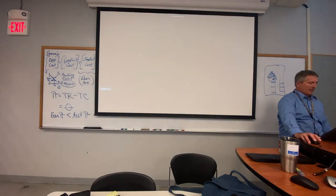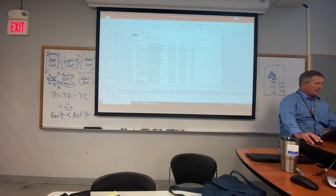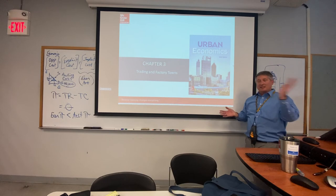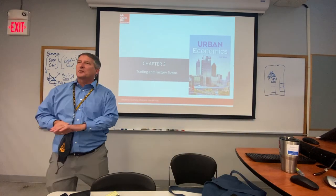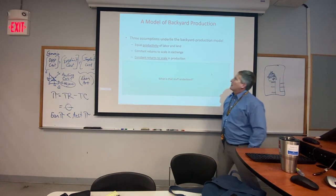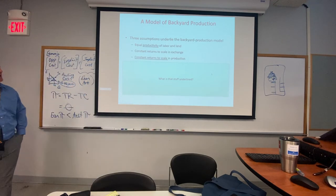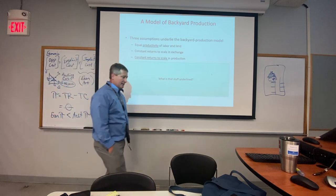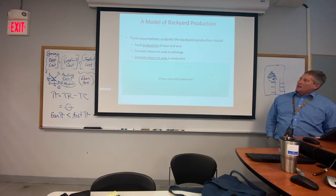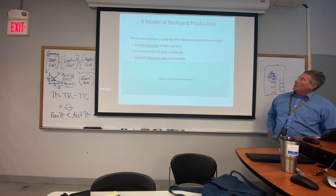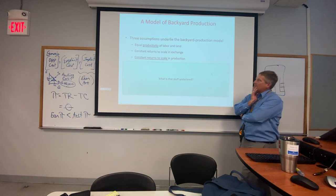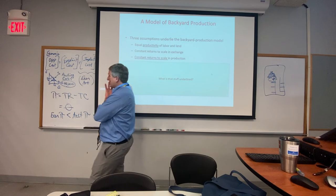Now we move into Chapter 3, which covers how towns build and scale up — starting with the backyard production model. Chapter 2 problems are due Thursday night. The backyard production model is somewhat like a production possibilities frontier. The key assumptions are equal productivity of labor and land, constant returns to scale in exchange, and constant returns to scale in production.